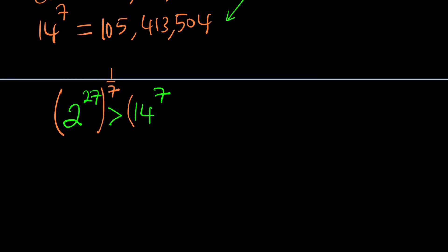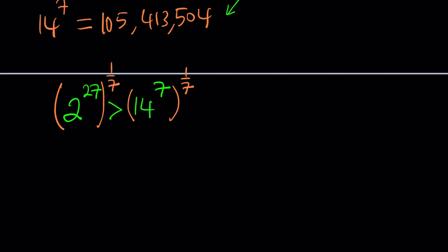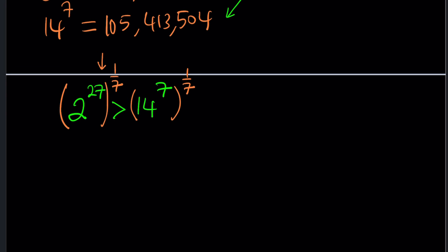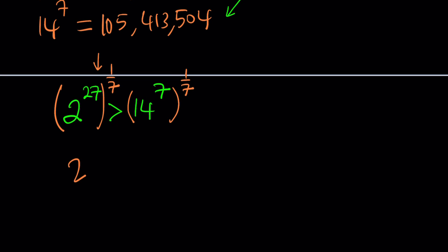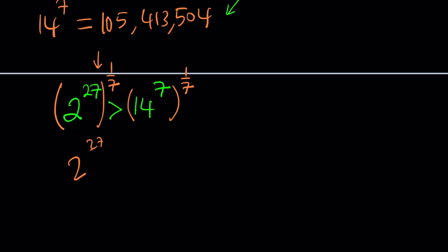And not only that's going to give us what we want, but on the right-hand side, we're going to get something super duper nice. Are you ready? So now, this gives us, obviously, when you have powers like this, power over power, you multiply the exponents. So that gives you 2 to the power 27 over 7. And the right-hand side, 7 over 7 is 1, and that gives us 14.